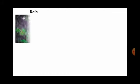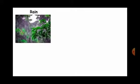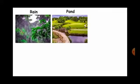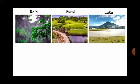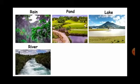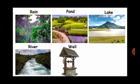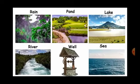Rain is the main source of water. We get water from ponds, lakes, rivers, wells, and sea. Sea water is very salty.